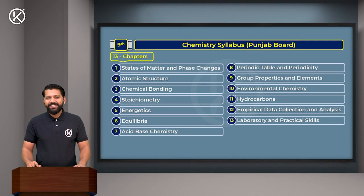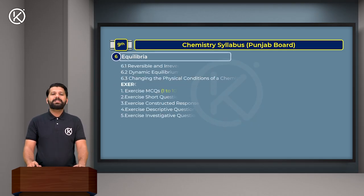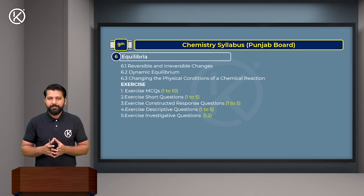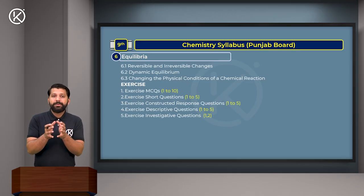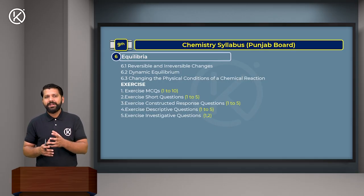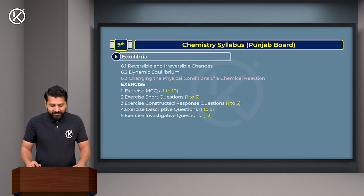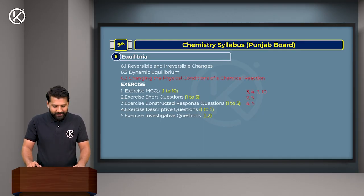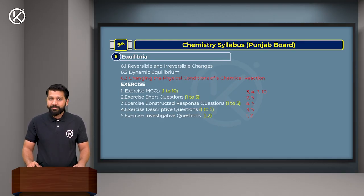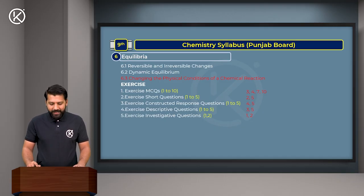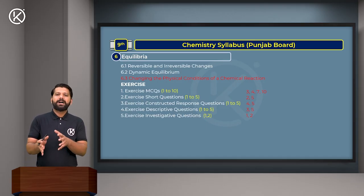Chapter 6 is Equilibria. In this chapter, you will study different types of equilibrium, the conditions under which equilibrium is achieved, forward and reverse reactions, and different applications of equilibrium expressions. The excluded topic is 6.3 - Changing the Physical Conditions of a Chemical Reaction. Excluded questions: MCQs 3, 4, 7, and 10; Short Questions 2 and 5; Constructive Response Questions 4 and 5; Descriptive Questions 3 and 5; and Investigative Questions 1 and 2.